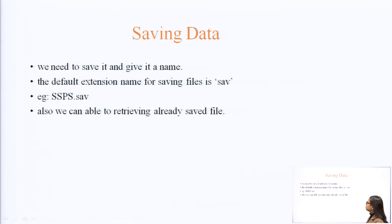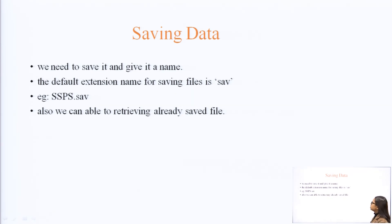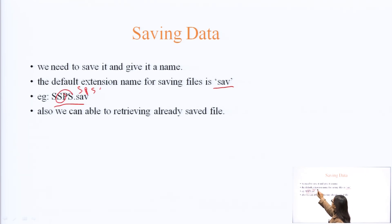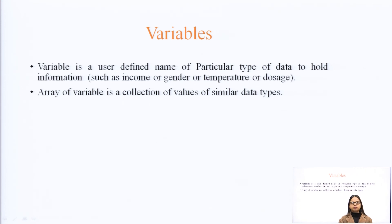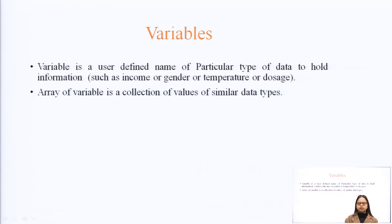For saving data, the default extension name for saving SPSS files is .sav. You can also retrieve already saved files. A variable is a user-defined name for a particular type of data to hold information, such as income, gender, temperature, or doses. An array of variables is a collection of values of similar types of data.